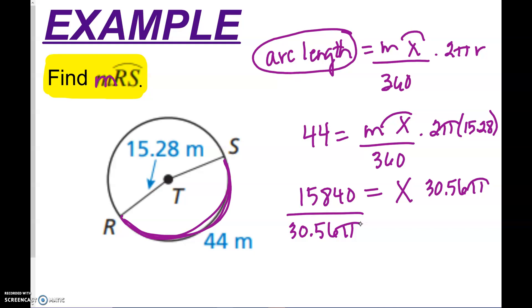And I'm going to take that 15.28 times 2. So that this is 30.56 pi. And now I'm going to divide both sides by 30.56 pi. So 15,840 divided by 30.56 pi. And I believe I am getting something like 164.9878. So I guess I'm going to round that to 165 degrees.